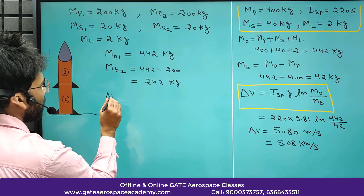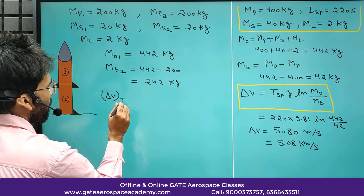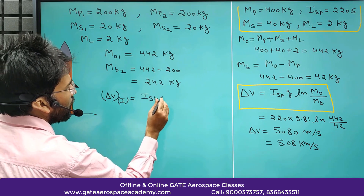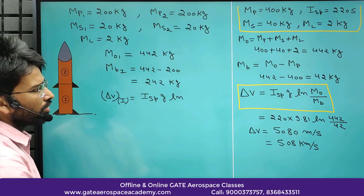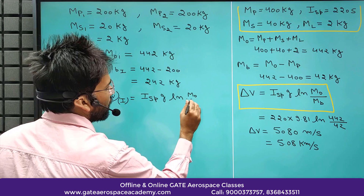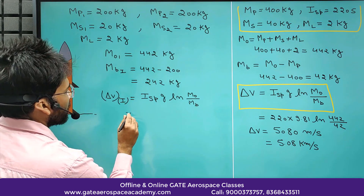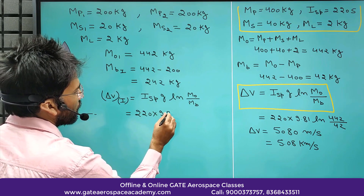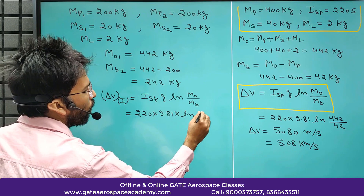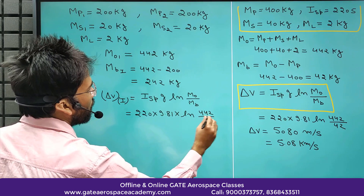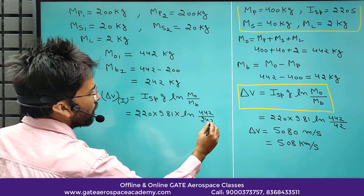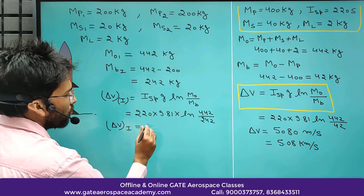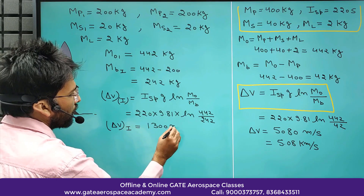Delta V for stage 1 uses the same formula: Isp times g times ln(m0 / mb). So that is 220 times 9.81 times ln(442 / 242). Delta V for the first stage equals 1300 meters per second.